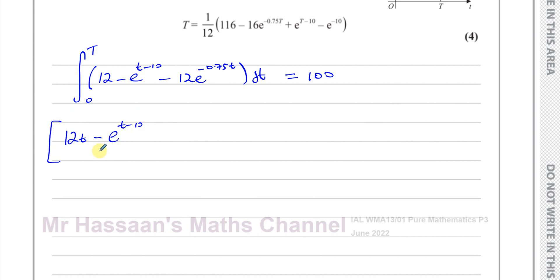And the differential of t minus 10 is 1, so that stays as it is. Minus 12e to the power of negative 0.75t. It stays the same, but then we divide by the differential of what's inside the function. This time, the differential of what's inside the function is negative 0.75.